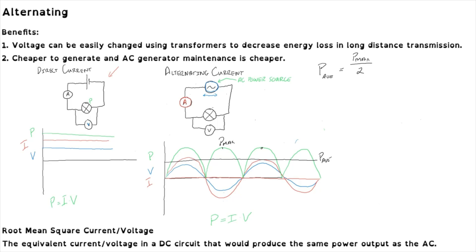Using algebra, since we know that the maximum power is simply the product of the maximum current and the maximum voltage, we can say that P average equals I max multiplied by V max, divided by two. We can then separate that into two terms: I max divided by the square root of two, and V max divided by the square root of two.